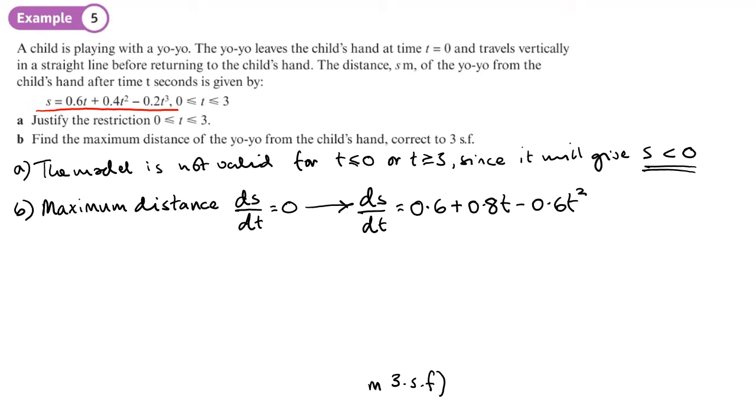We're going to set that equal to 0. So let's put it in order: minus 0.6t squared plus 0.8t plus 0.6 equals 0. That's not particularly nice to solve in the way that it's written. So I'm going to multiply everything by negative 10. So I've got 6t squared minus 8t minus 6. Let's simplify that.